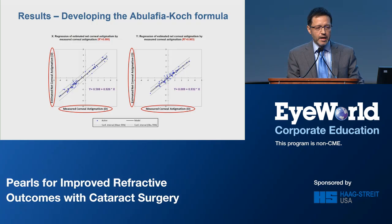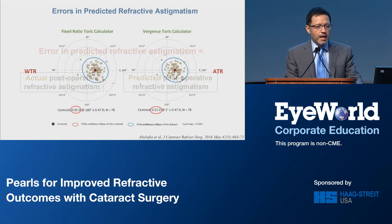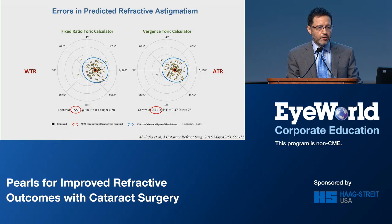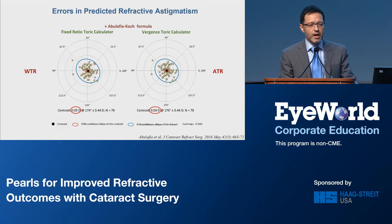We then needed to validate the formula. In order to calculate the errors in the predicted refractive astigmatism, we did a vector analysis. The results show the error in predicted residual astigmatism for both calculators without any adjustments — both had against-the-rule prediction errors with a centroid of more than 0.5 diopters. However, applying the regression formula shifted all these errors back to the center, with centroid prediction errors close to zero. These results were very similar to those of the Barrett Toric calculator.